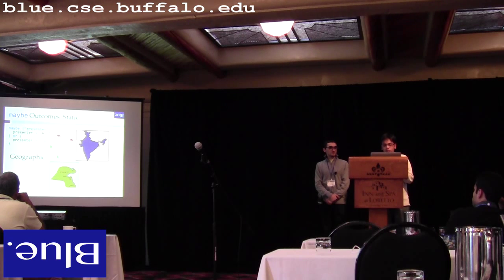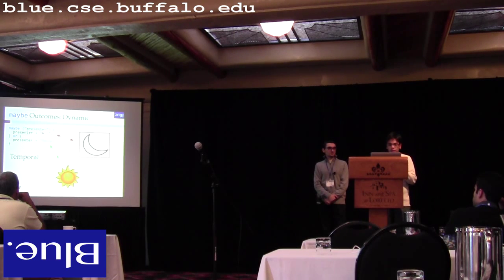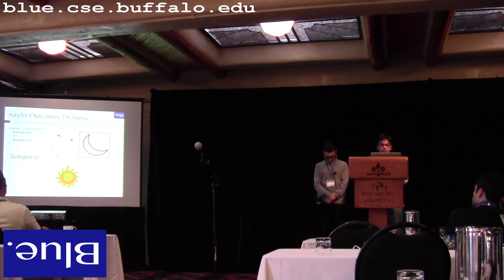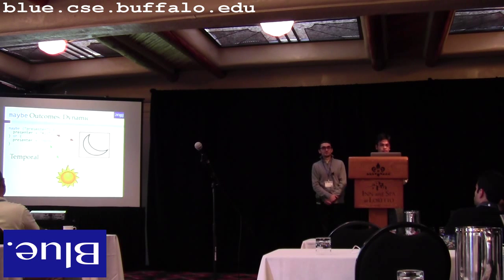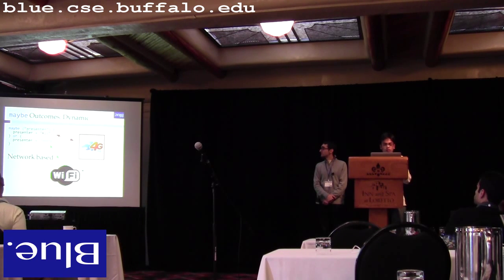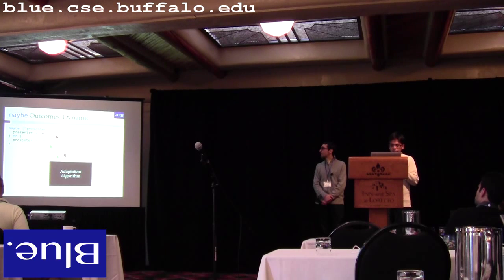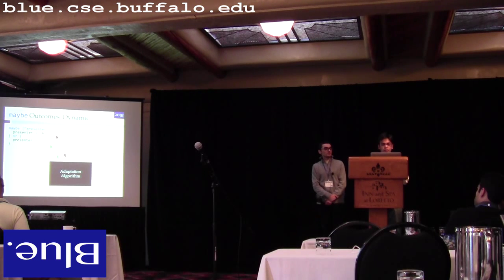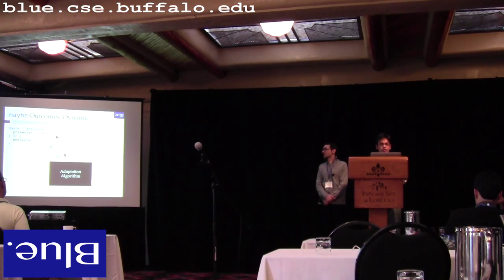Coming to dynamic adaptations — what if an app wants to behave differently during the night when it's not used much, versus the daytime? These are examples of temporal adaptations and network-based adaptations. For example, Ali prefers to use cellular data whereas Jerry prefers Wi-Fi. The maybe system has adaptation algorithms embedded into itself, and this adaptation algorithm determines which block to execute.